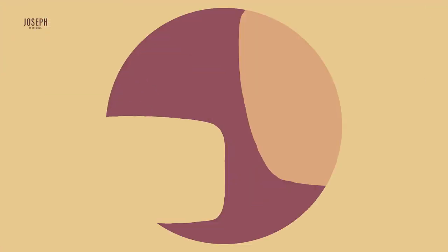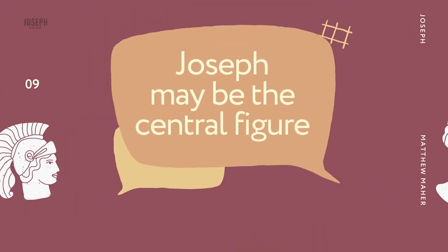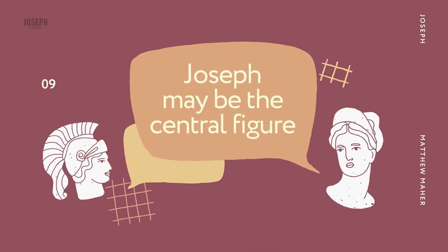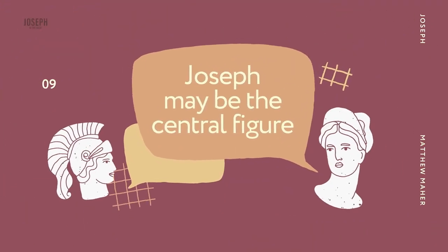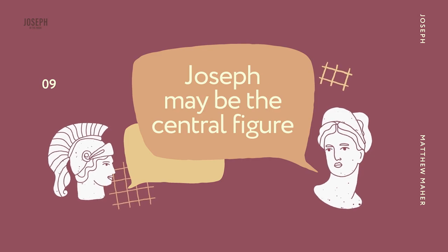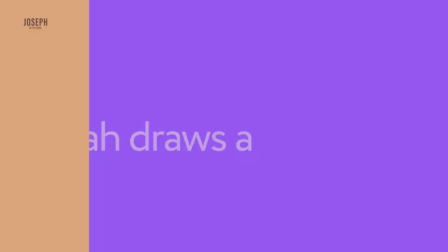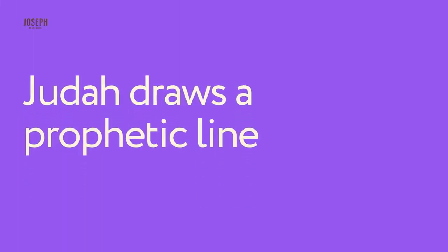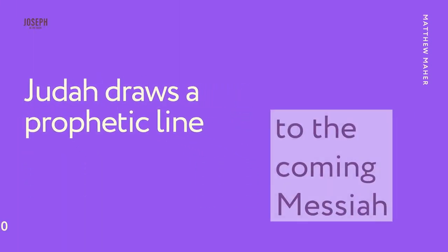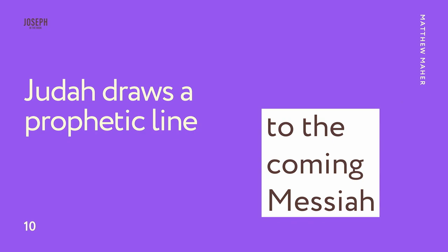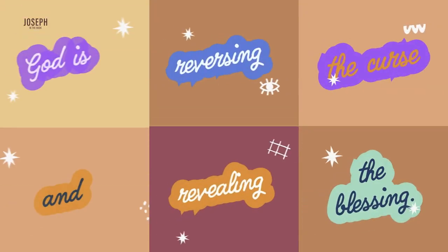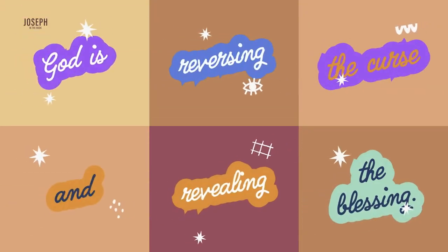Throughout the account, Joseph may be the central figure, but his family, especially Judah, draws a prophetic line to the coming Messiah. Through Joseph in the book, God is reversing the curse and revealing the blessing.